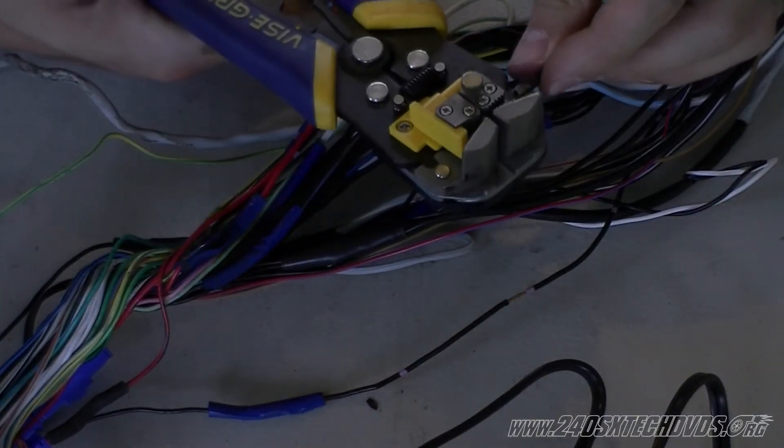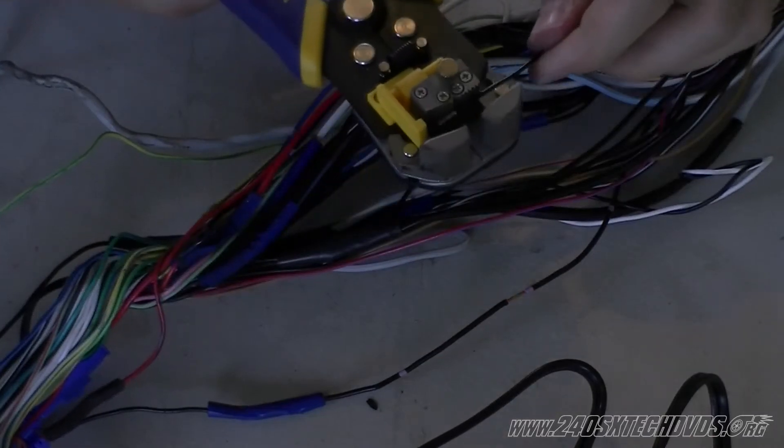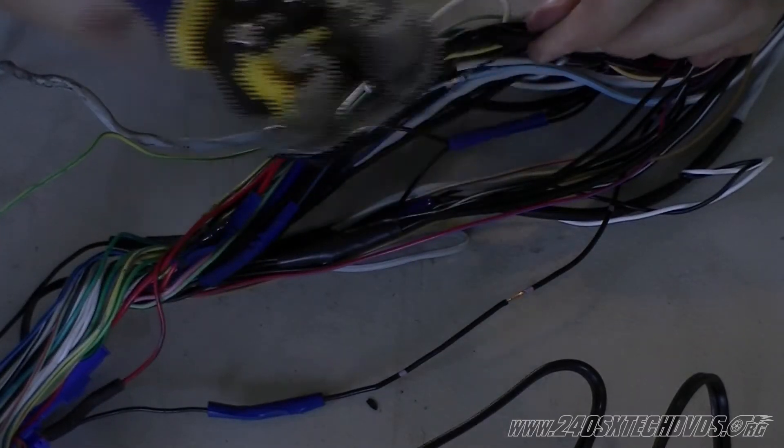I'm going to strip this wire, get it ready to install on. I'm going to strip it a little bit large because you're going to twist it around the wire.